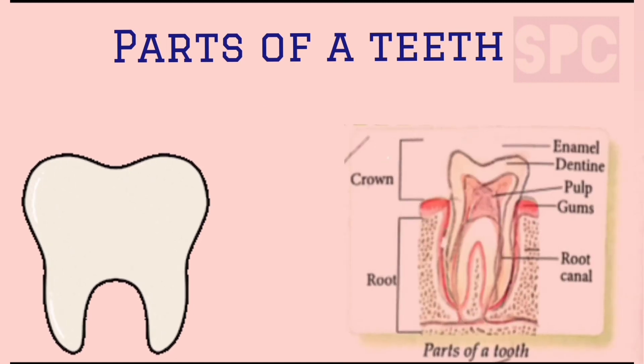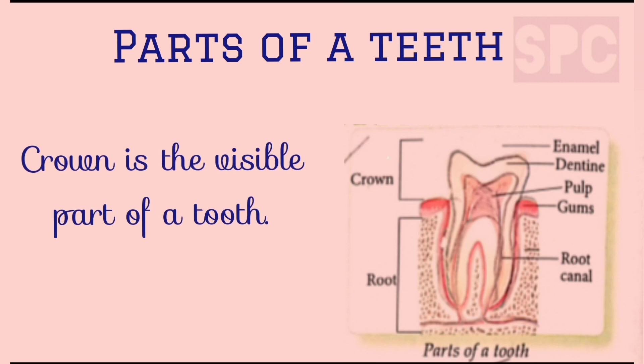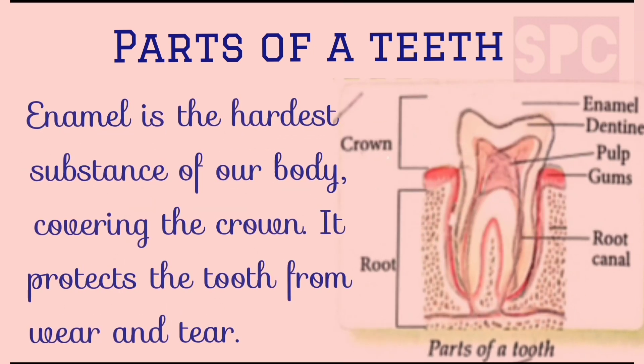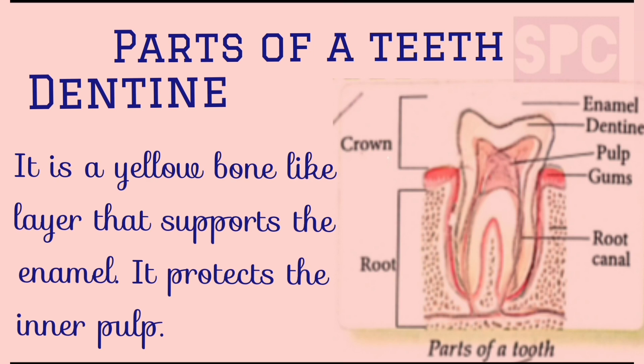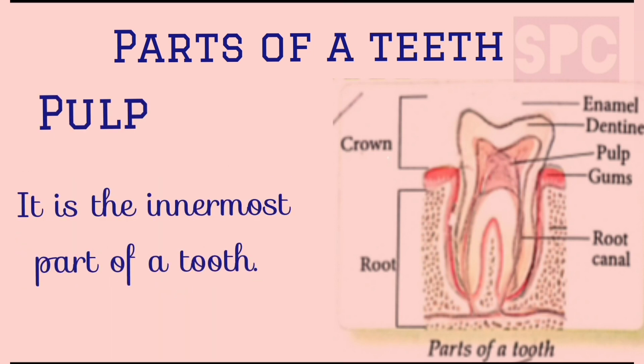Let's understand the structure of a tooth in detail. A tooth is divided into two main parts: crown and root. The crown is the visible part of the tooth. Enamel is the hardest substance in our body that covers the crown and protects the tooth from wear and tear. Dentine is a yellow bone-like layer that supports the enamel and protects the inner pulp.